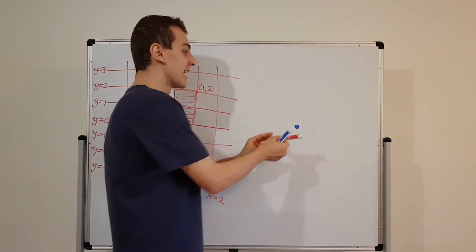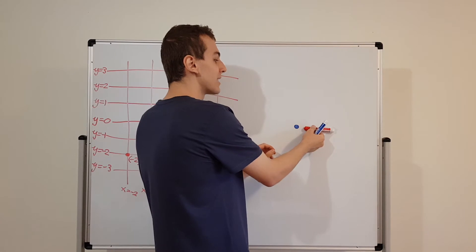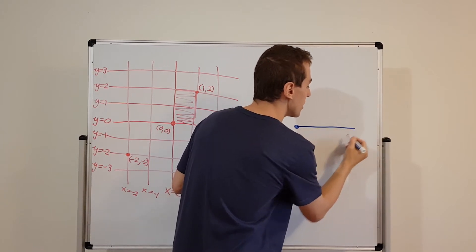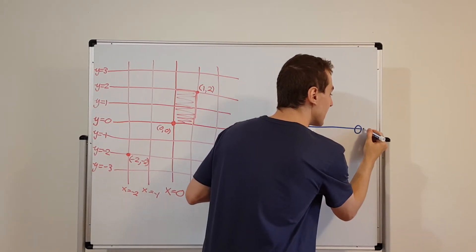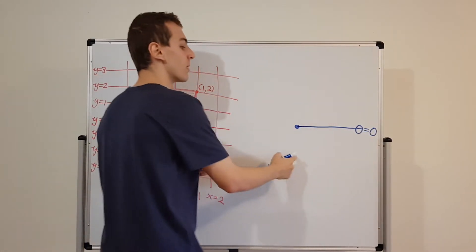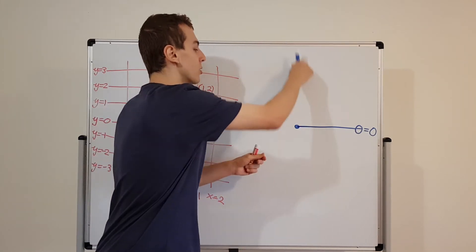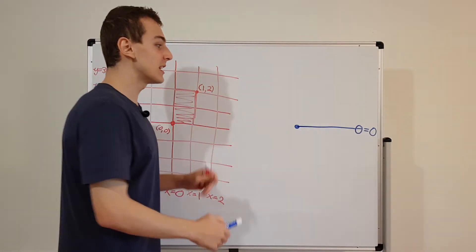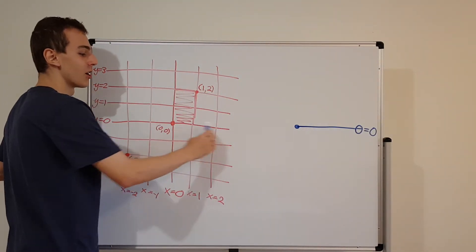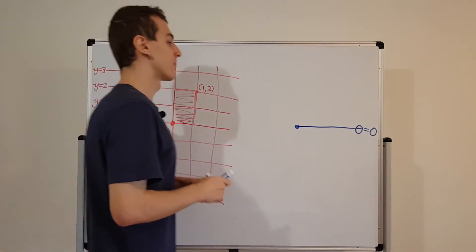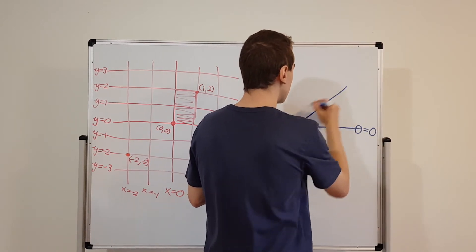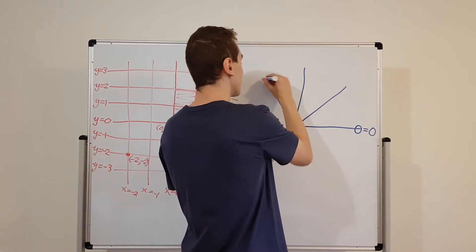The convention I'm going to use is that this axis over here is going to be zero — so this angle theta is equal to zero. This is just the convention; we could set any line coming out of the origin to be our zero, but I'm choosing the positive horizontal axis, which is the same as the positive x-axis. What we can then do is draw lines where theta is constant — each one is a straight line coming out of the origin.